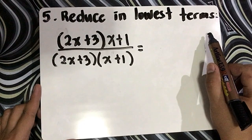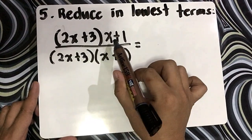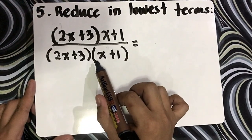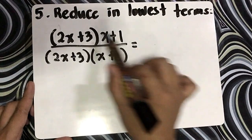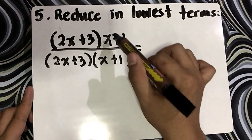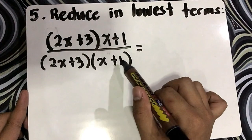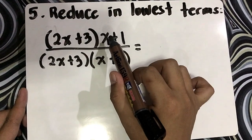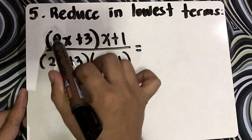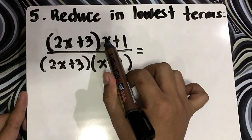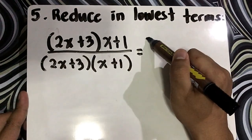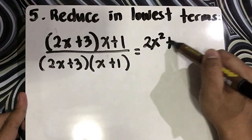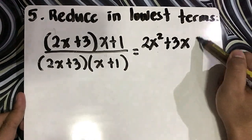Reduce in lowest terms: quantity 2x plus 3 times x(x plus 1), all over quantity 2x plus 3 times quantity x plus 1. This is a tricky part — we can't cancel x plus 1 yet. First step, we need to distribute x because it is part of the expression. So x times 2x is 2x squared, x times 3 is plus 3x, then plus 1.